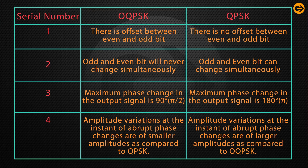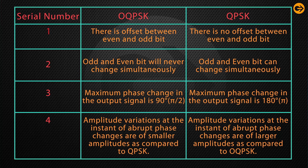Now let us discuss the comparison between OQPSK and QPSK. In OQPSK there is an offset between even and odd bits, but in QPSK there is no offset. In OQPSK, odd and even bits will never change simultaneously, but in QPSK they can. The maximum phase change in OQPSK is 90 degrees (π/2), while in QPSK it is 180 degrees (π). Amplitude variation at abrupt phase changes is smaller in OQPSK compared to QPSK, where amplitude variation is larger.